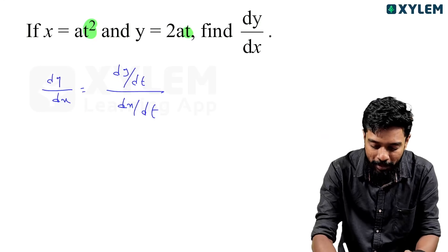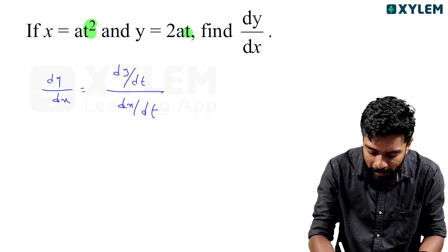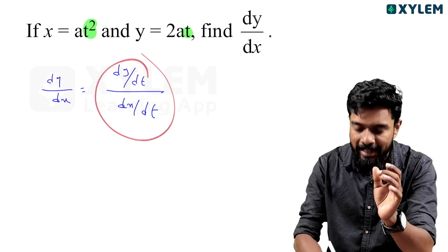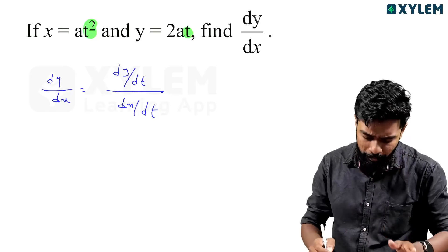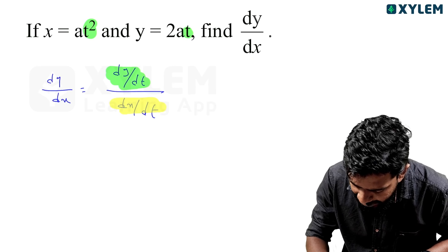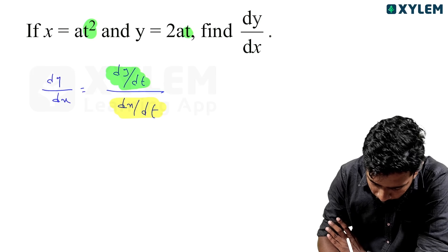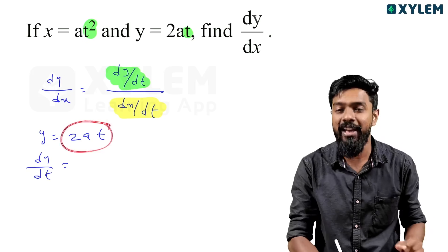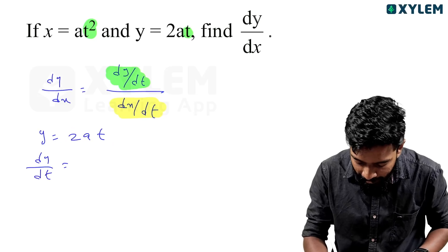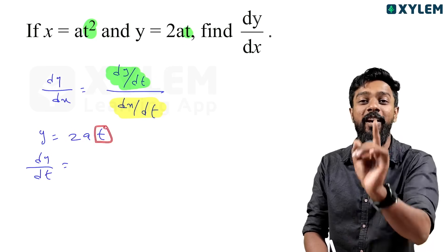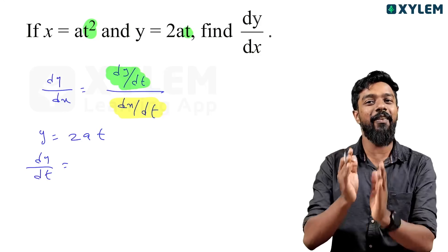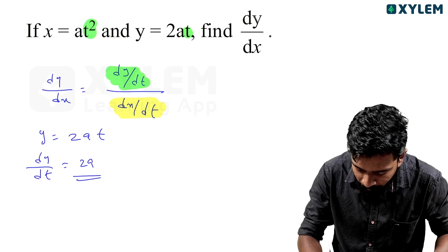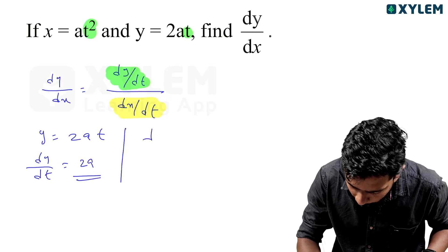The numerator is dy and dx is divided by dx, so the fraction remains the same — this is dy by dx. If we have dy by dt and dx by dt, then dy by dx equals dy by dt divided by dx by dt.